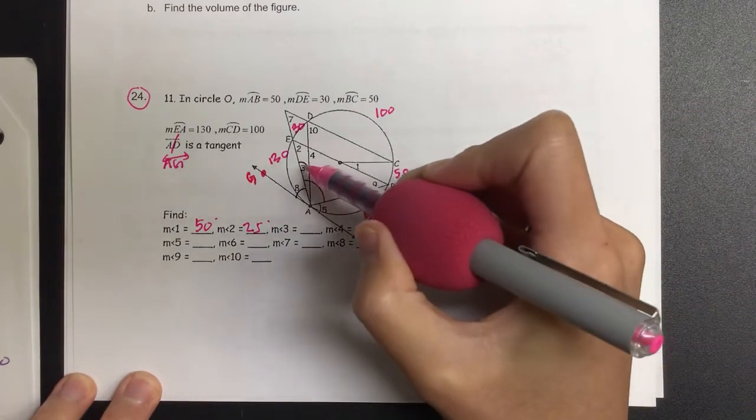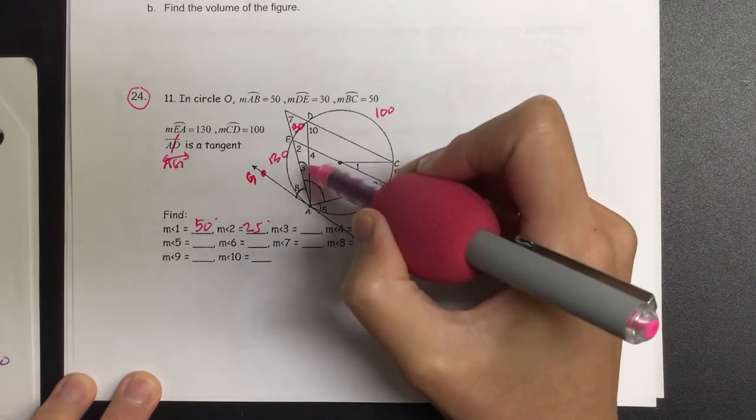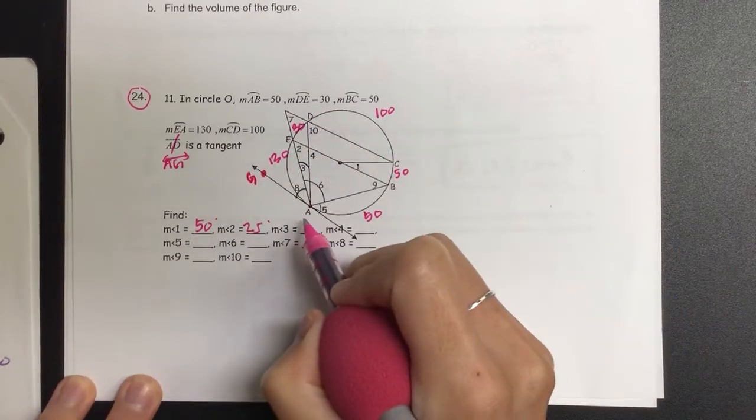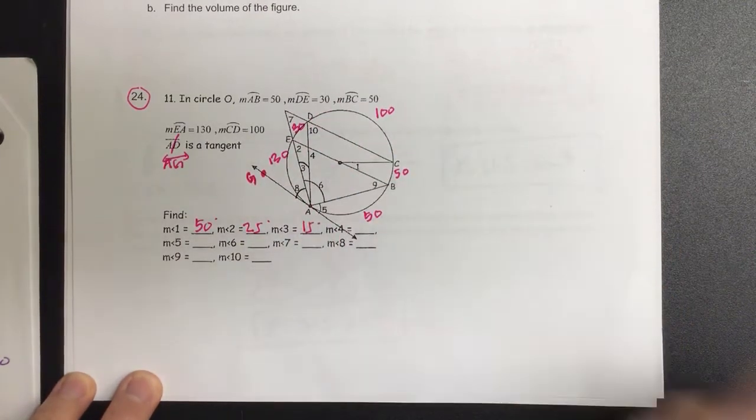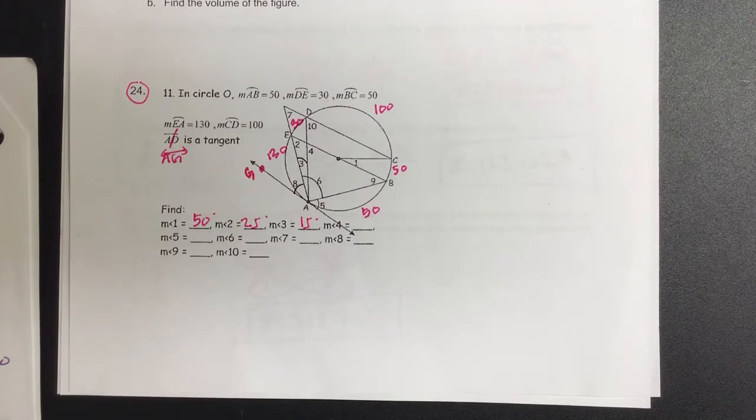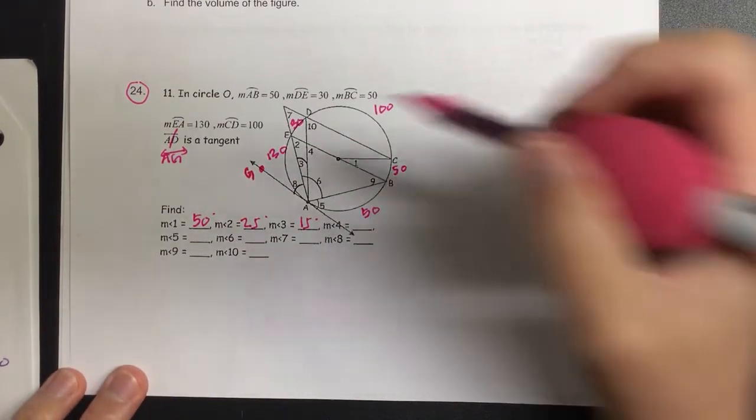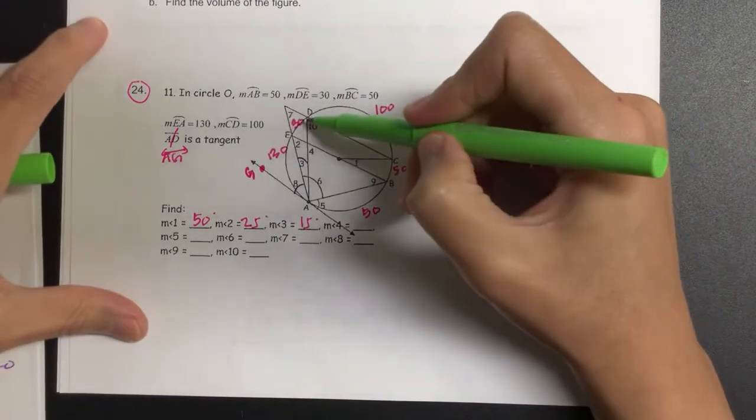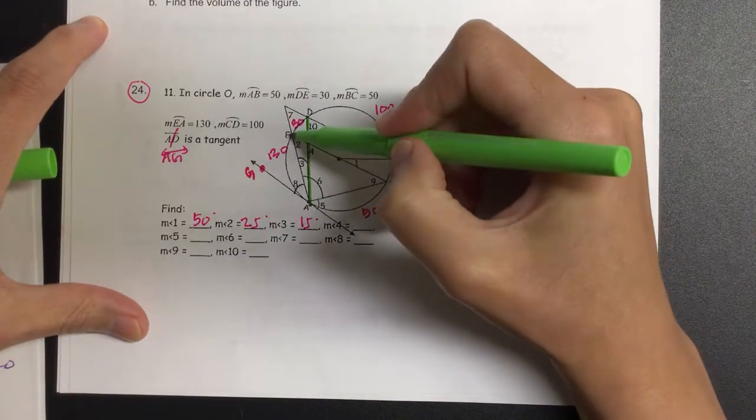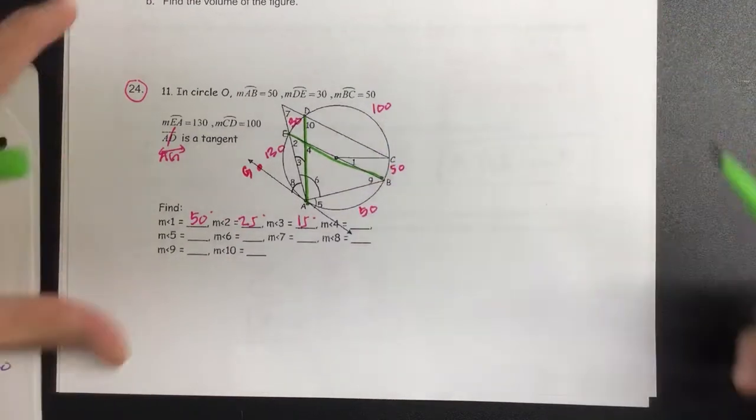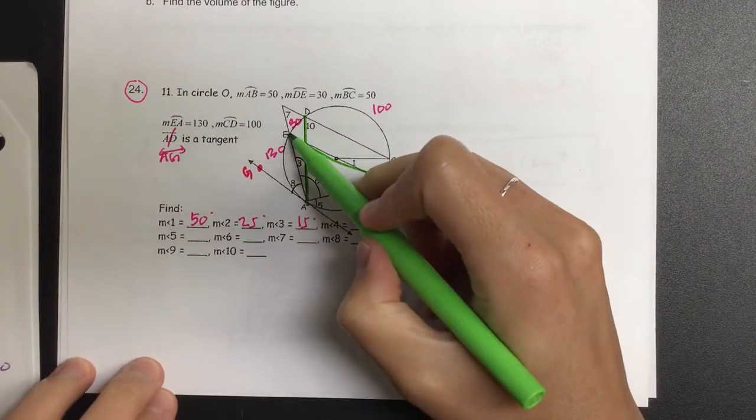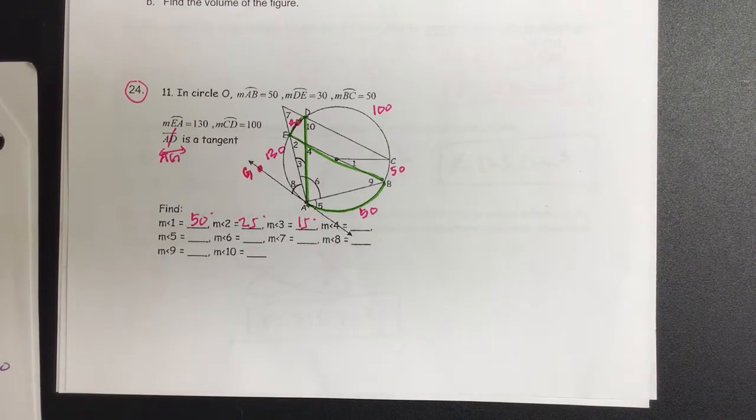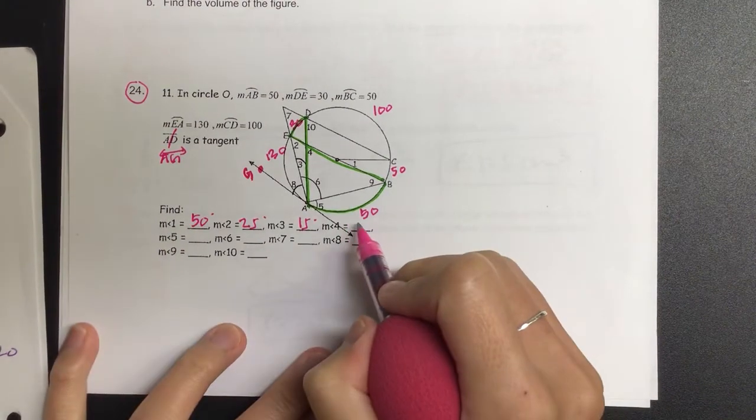Let's go to 3. 3 is right here. Angle 3 is also our inscribed angle. So we know the arc is 30, so it must be how many? 15. For angle 4, it is in the inside. So here's what I need to do. Angle 4 is right here. So I need to find the average between these two arcs. So we know we have 30 plus 50 divided by 2 is 40.